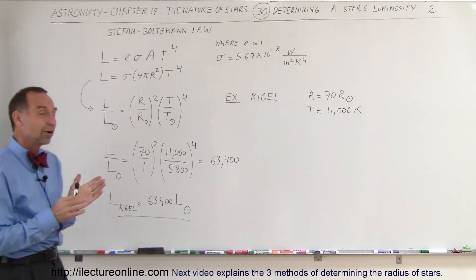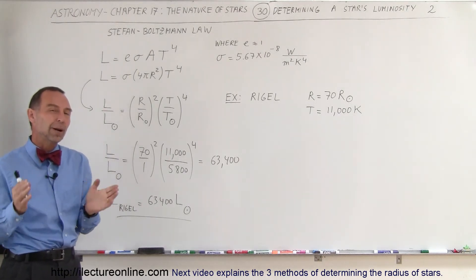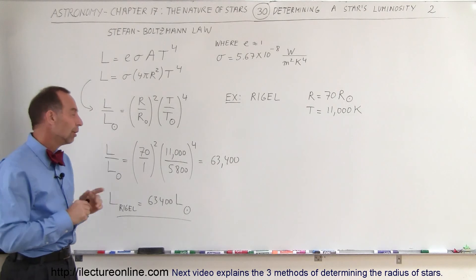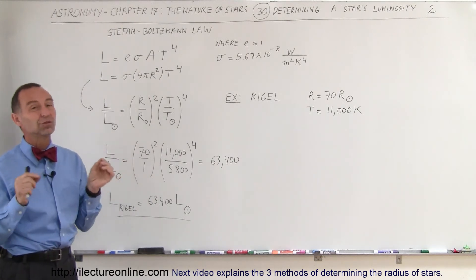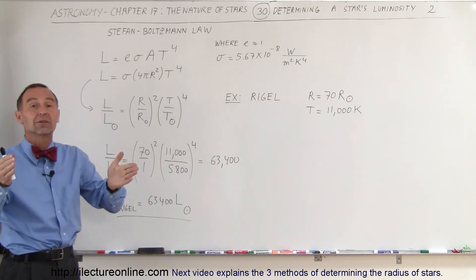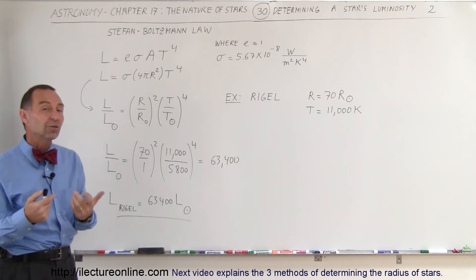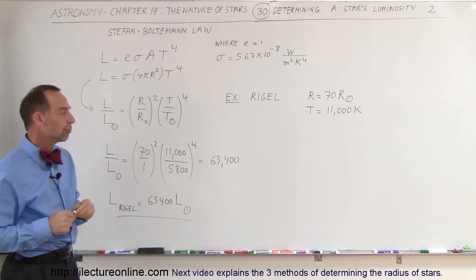Now, it turns out when it comes to stars, figuring out the temperature is probably the easier of the two. Figuring out the radius is more difficult because how do you figure out the radius of a star? There are ways we can do that and we'll show you in some future videos.